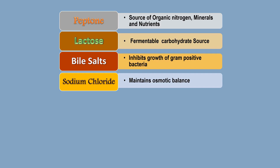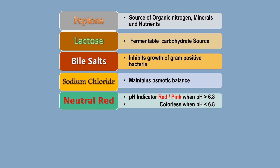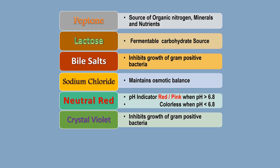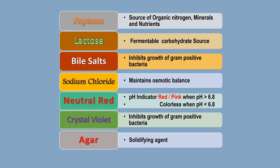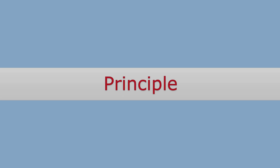The fifth ingredient is neutral red, which is a pH indicator. It is red or pink when the pH is below 6.8, and colorless when the pH is above 6.8. The sixth ingredient is crystal violet, which also inhibits the growth of gram-positive bacteria. The seventh and last ingredient is agar, which acts as a solidifying agent.